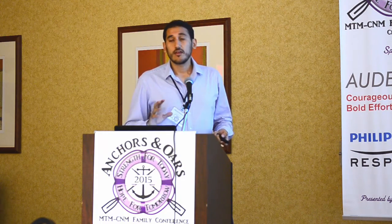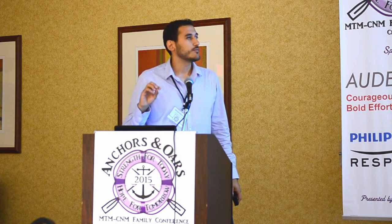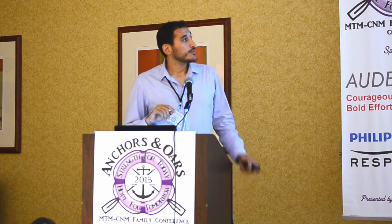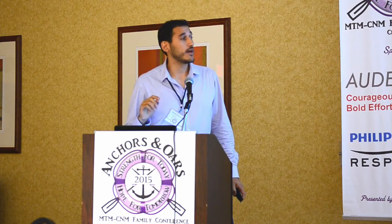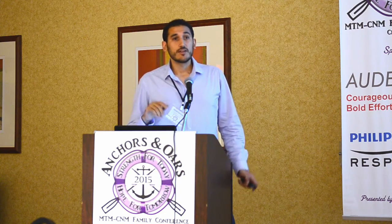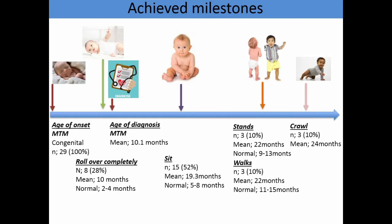From now on, I'm going to give you data primarily from the MTM group. In this group, age of onset was congenital in 100% of patients. The mean time to diagnosis was 10.1 months. All patients had gross motor development delay. Looking at specific milestones, the highest motor milestone achieved was: 28% of patients could roll over completely, 52% could sit by themselves, 10% could stand and walk, and 10% could crawl by 24 months of age.